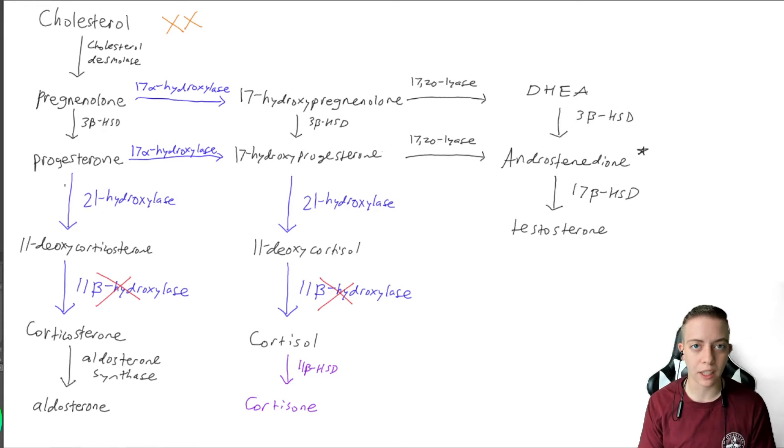But today, 21-hydroxylase is working, so we do produce 11-deoxycorticosterone. And this is a really important point, and I'll get into this in a second. We have all of these, but then 11-beta-hydroxylase is nonfunctional.